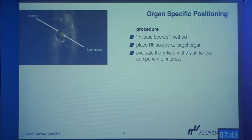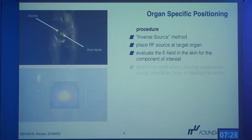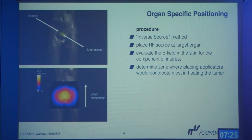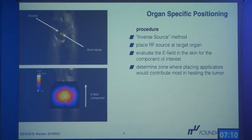After delineating the target tumor, we place a short dipole RF source into the target and perform an EM simulation. We then evaluate the tangential component of the electromagnetic field in the skin and obtain an intensity distribution of the E-field component along the head-to-foot direction. Higher intensity in the skin means lower attenuation from target to skin, so placing elements in high-intensity areas results in higher contribution to hitting the target.